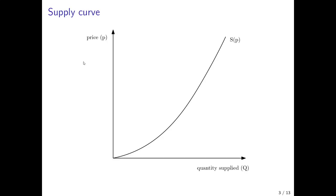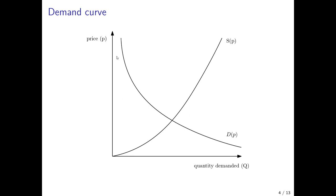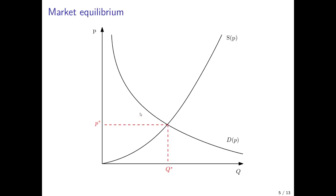We start by recalling our diagram used to analyze a market. We have the supply curve, which is an upward sloping curve in the space of price level and quantity supplied, so firms supply more if the price is higher. We also draw the demand curve in the same space, a downward sloping curve, which implies that for a higher price, households demand fewer goods, and for a lower price, they demand more. Where these two curves intersect, we have the market equilibrium — the equilibrium price where supply equals demand, and the equilibrium quantity Q star.